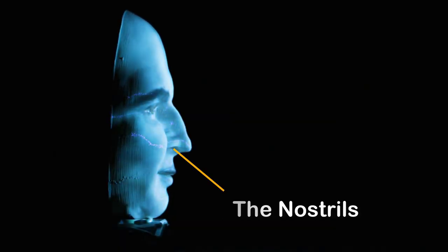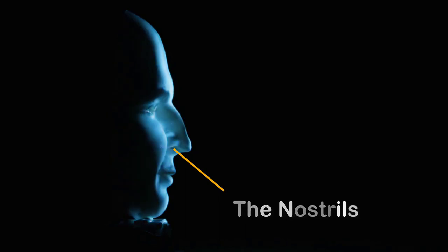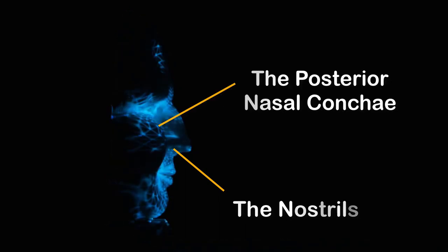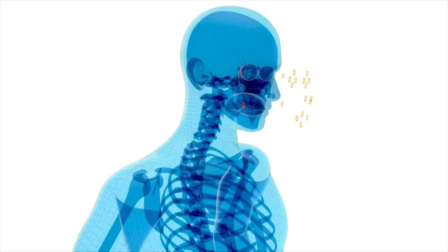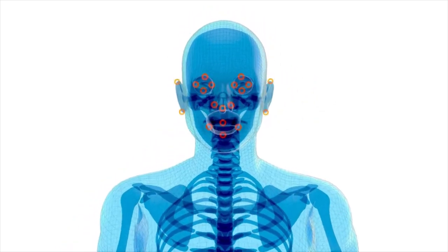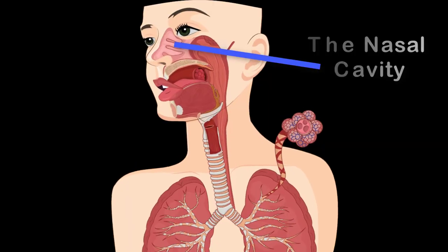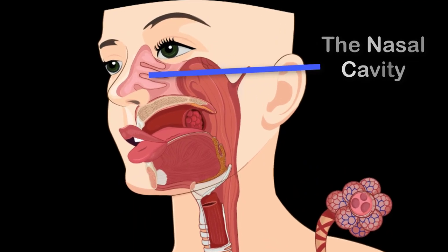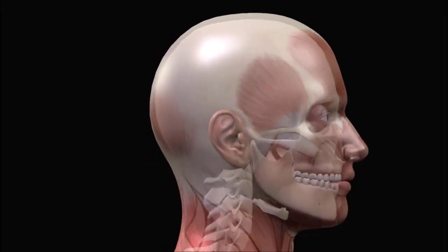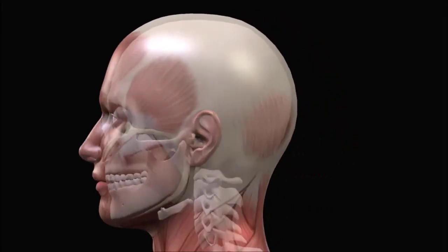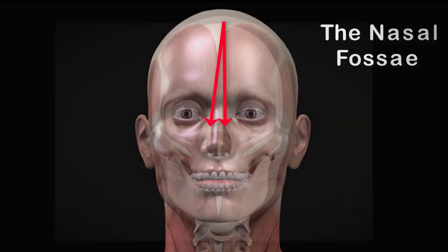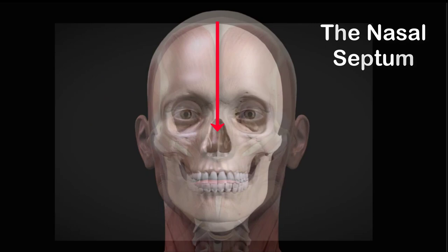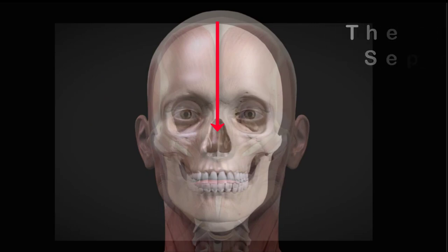The nose extends from a pair of anterior openings called the nostrils and ends at a pair of posterior openings called the posterior nasal concha. The facial part of the nose is shaped by bone and hyaline cartilage. The inner chamber of the nose is called the nasal cavity, which is divided into right and left halves called the nasal fossae.